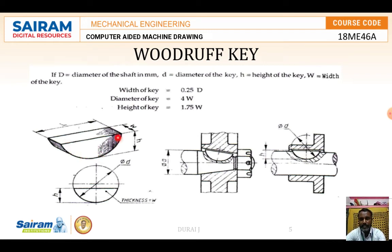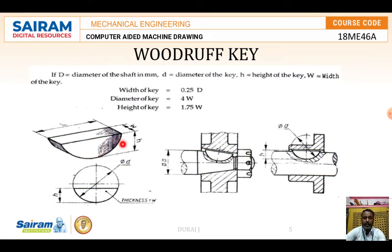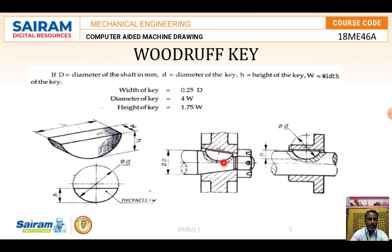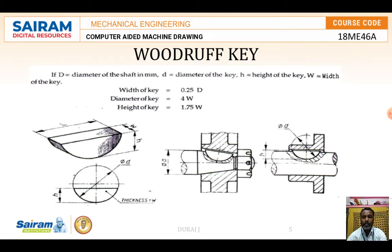So the Woodruff key — in the Woodruff key, the 3D picture is like this. The width and length of the Woodruff key are defined, and the height is also specified. It is almost a semicircular shape. Width of the key is 0.25D, diameter of the key is 4W (four times the width), and height of the key is 1.75W. It is normally placed on some tapered shapes in components. According to these formulas, we design and place the Woodruff key.